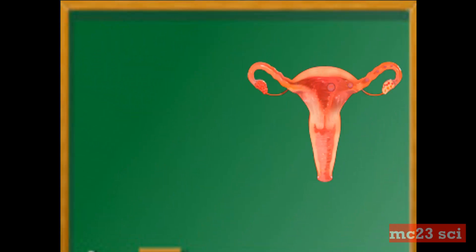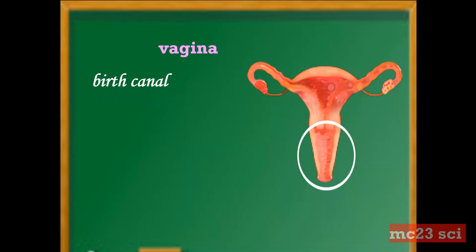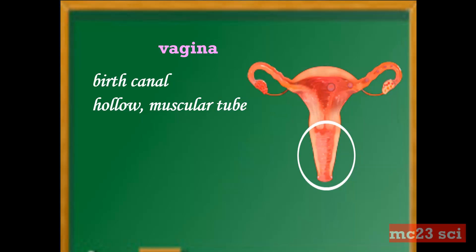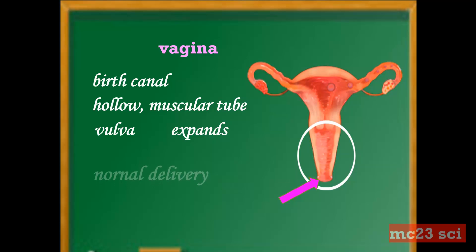The last one is the vagina. This is also called the birth canal. It is a hollow muscular tube that leads to the opening called the vulva. It expands to let the baby pass through during normal delivery.